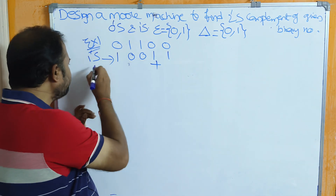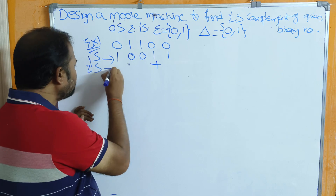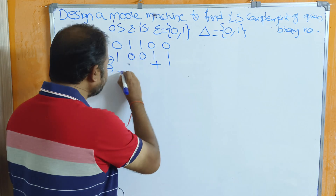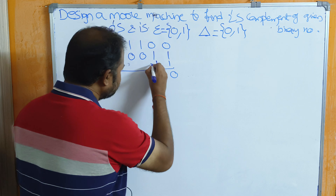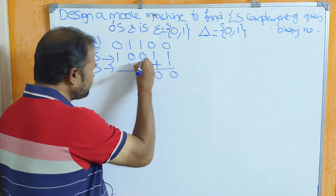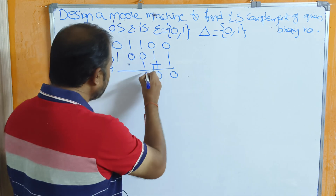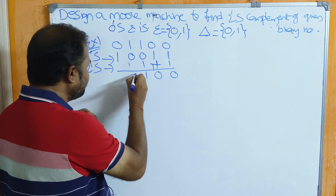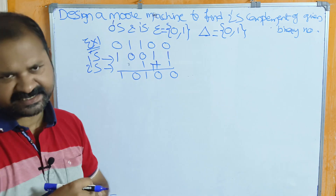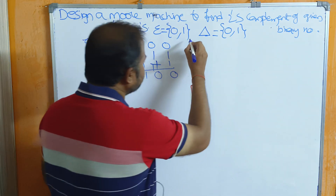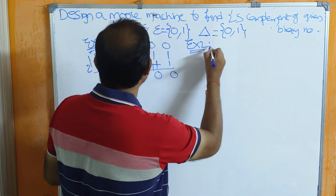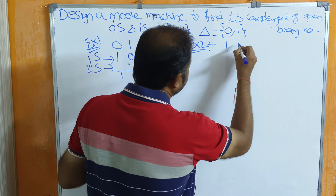2's complement equals 1's complement plus 1. So adding 1: 1+1 = 0 carry 1, 1+1 = 0 carry 1, 0+1 = 1, next 0 = 1. So this is the result.